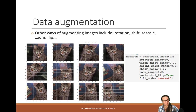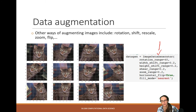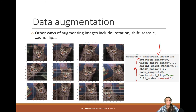How does data augmentation happen with images? We can rotate images, shift, rescale, zoom, flip, etc. — this is an image of my cat Sendai. We'll experiment with this in the lab. The data generator method is very cool — when we load the dataset, we can define all possible data augmentation methods with a random factor, which is amazing.